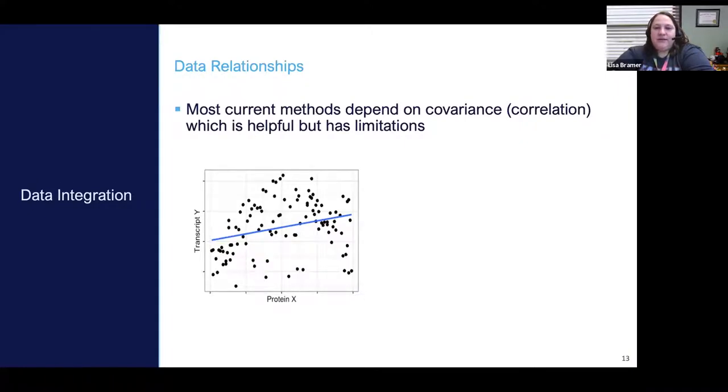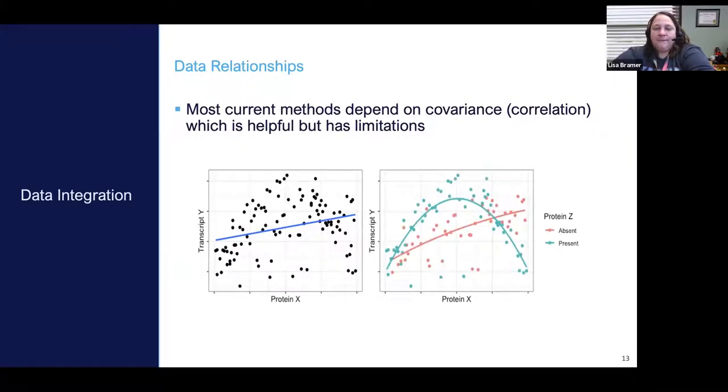We know biological data is super complex. Suppose the relationship between protein X and transcript Y might depend on whether or not I see protein Z. A lot of the methods like networks and SPLSDA, if interactions exist like the plot on the right, you're going to have trouble finding them because you would have to explicitly put them into the model. That's a seemingly impossible task when dealing with thousands of biomolecules.